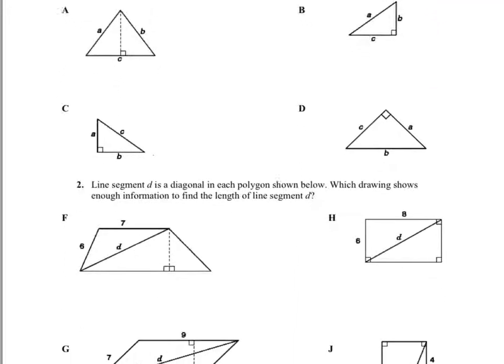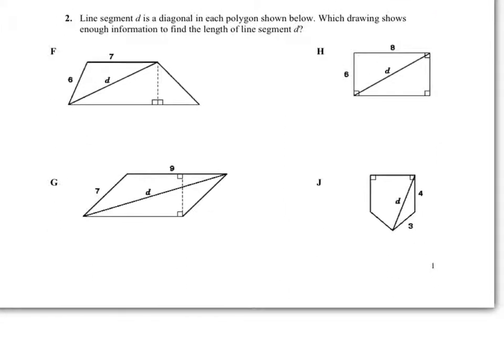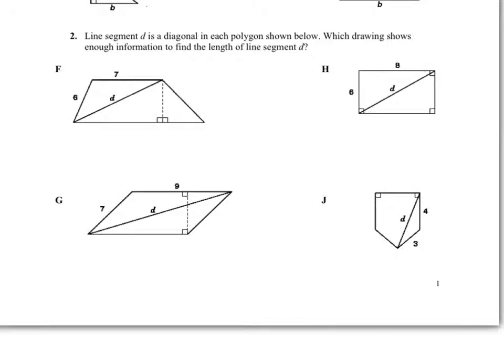Okay, question number two says line segment D is the diagonal of each polygon shown below. What does that mean? What do you think that means if it's the diagonal? Which drawing shows enough information to find the length of line D? So you think they would be trying to say that line D is the hypotenuse? Okay, go ahead and pause it, work the problem.